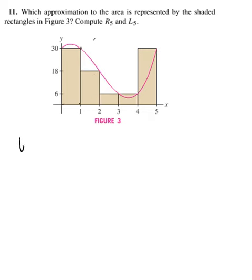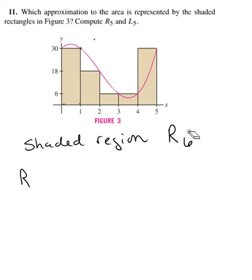So we have a picture of the shaded region. This is definitely looking like the right-hand endpoints of each subinterval to get the height, so R sub 5. Now we'll go ahead and compute, sorry, not R sub 6, R sub 5, because there's 1, 2, 3, 4, 5 rectangles. So computing R sub 5, we have delta x which is 1.